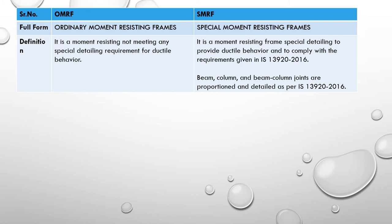In the case of a special moment resisting frame, the building must be designed using IS 13920:2016. All beams, columns, and joints must be proportioned and detailed as per IS 13920. The code specifies important requirements such as a minimum beam width of 200 mm, minimum spacing of horizontal and vertical stirrups. If you follow all these instructions, the building qualifies as SMRF. This also covers shear wall design and coupling beam reinforcement detailing.